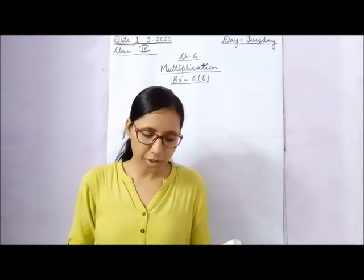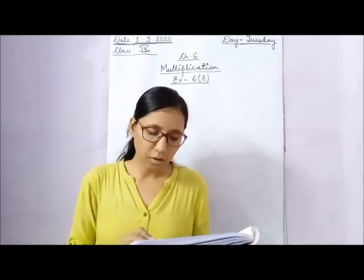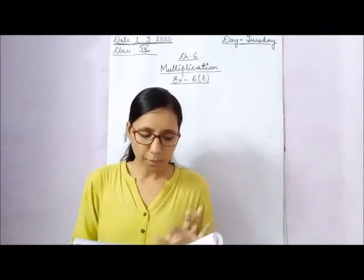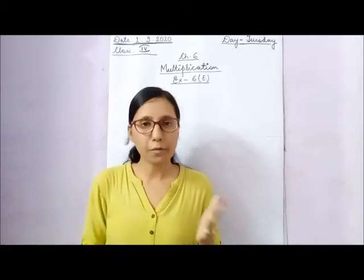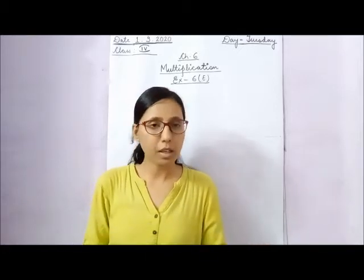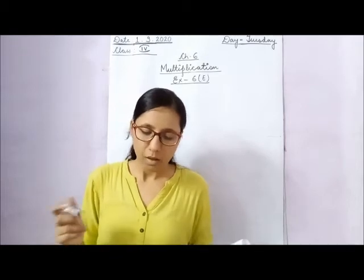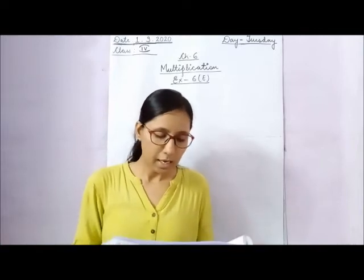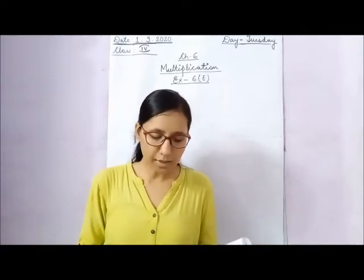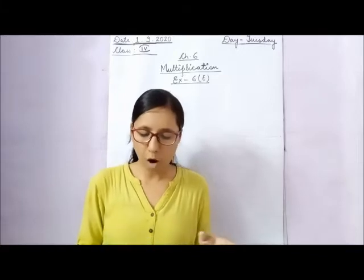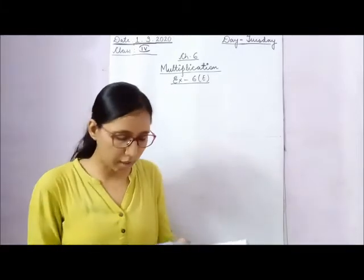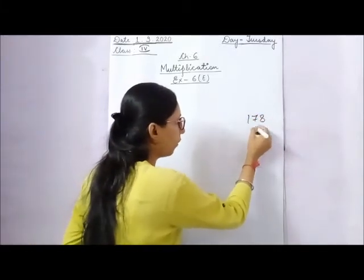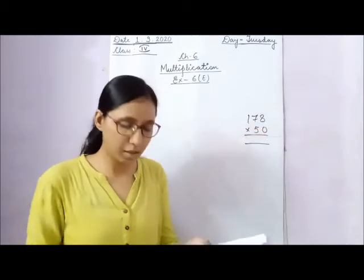Questions 5 and 6 you will do on your own. In question 5, if 1 meter of cloth costs Rs. 245, what will be the cost of 36 meters? Multiply 245 by 36. In question 6, there are 178 fifty-rupee notes in a bag. How much money is there? Multiply 178 by 50.